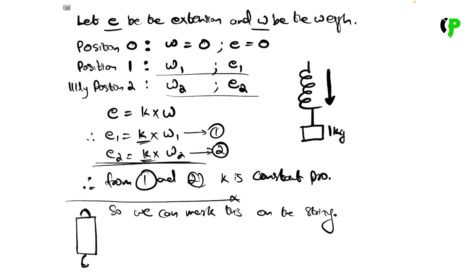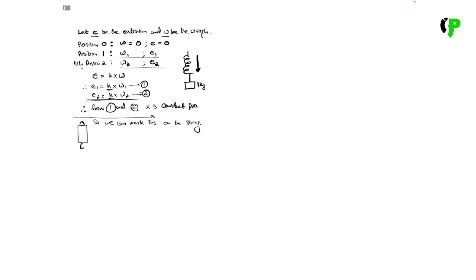We mark the spring. We go to the first position. If we need position zero, we don't have to use the weight. There is no expansion. If we use the same weight, we get the same extension.